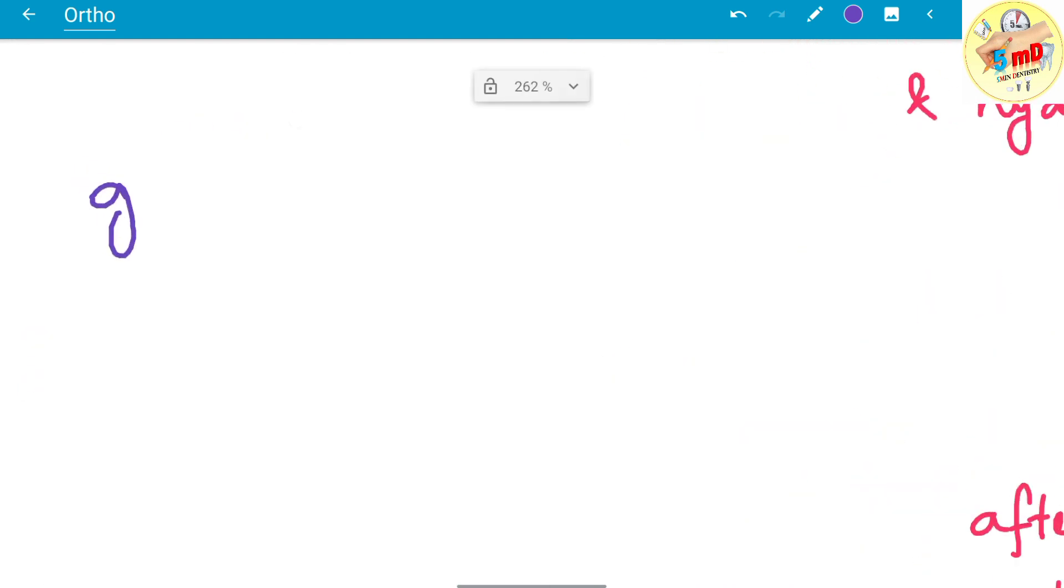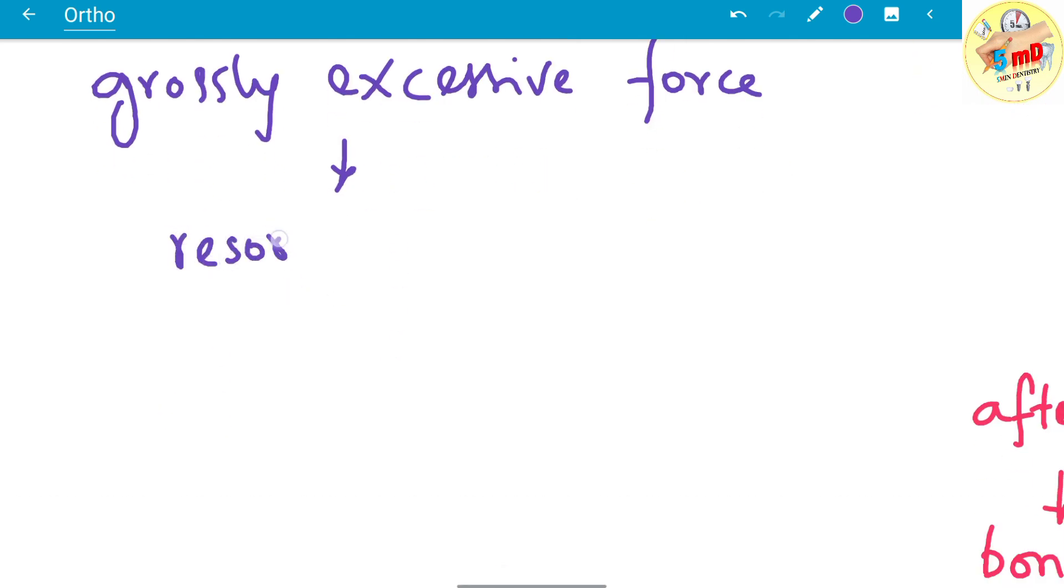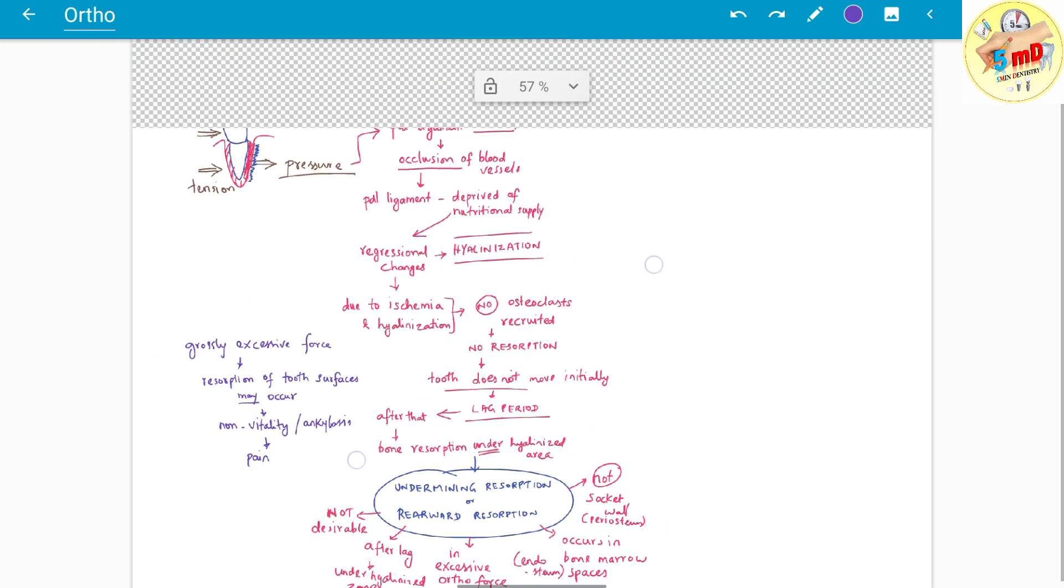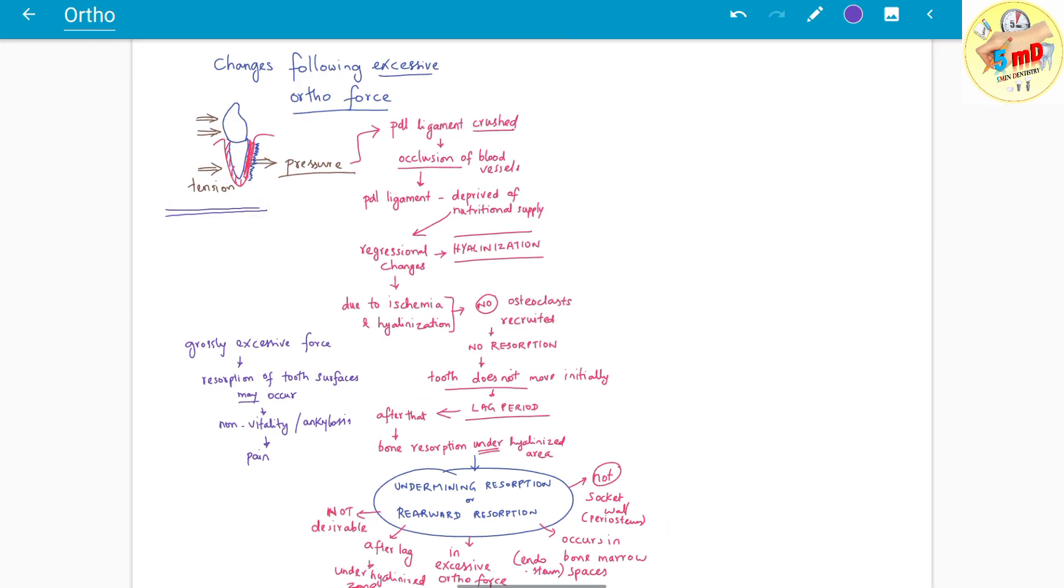So we saw the main changes in the pressure side. What happens if the force is more than excessive? Apart from the periodontal ligament being damaged, the tooth also undergoes some kind of damage. The tooth surface may show resorption, it may undergo ankylosis or lose its vitality—the tooth becomes a dead tooth. It eventually causes the patient more discomfort and pain, which is not normally a feature of ortho treatment.